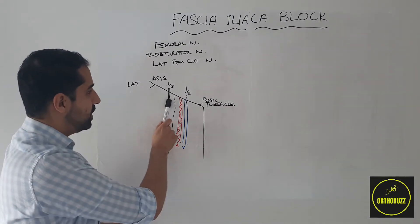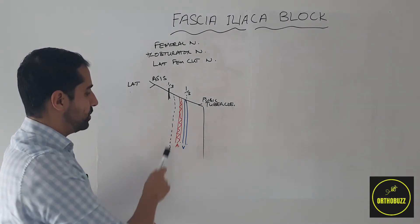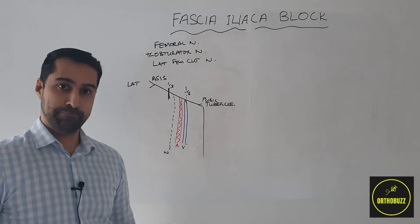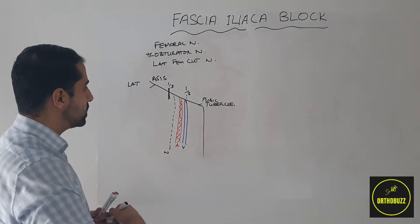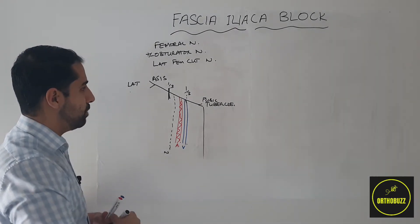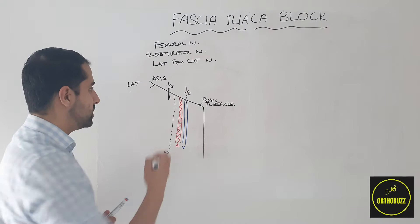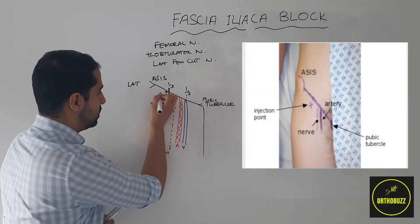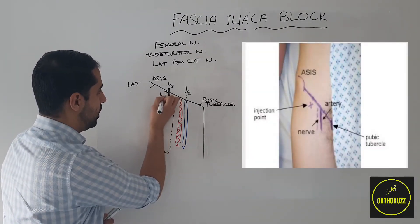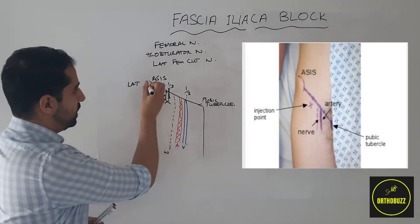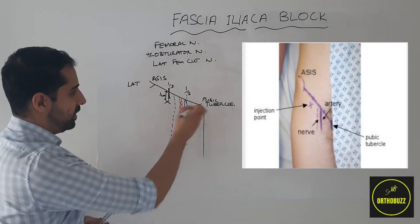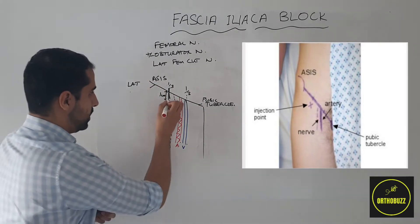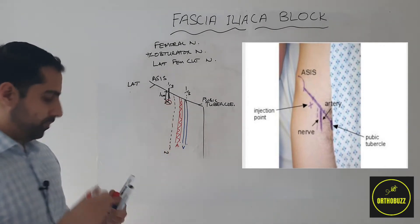As you can see, this is lateral to the artery and the vein comfortably. We also want to make sure that the point for injection is one centimetre distal to the line between the anterior superior iliac spine and the pubic tubercle, and this is marked with the X over here.